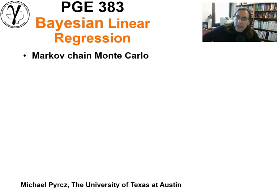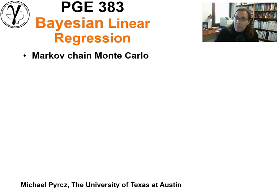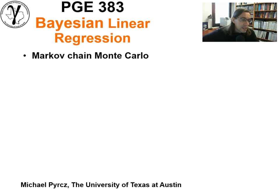Hey, howdy everyone. In our previous lecture we introduced the concept of Bayesian linear regression. Now that we're dealing with that system and we recognize it's very powerful — we can incorporate priors, the distributions for the parameters are being estimated directly — it's really cool stuff, but we can't solve that problem directly. We need to sample the problem, sample the posterior, in order to solve it. So let's talk about how we can do that using Markov chain Monte Carlo.